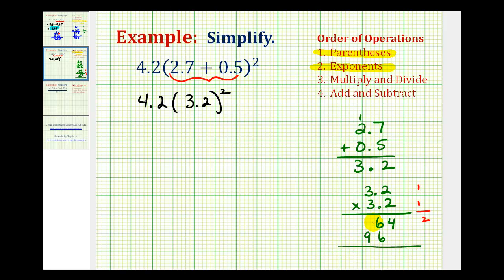And now we'll add, but we can put a 0 here. 4 plus 0 is 4, 6 plus 6 is 12, carry a 1, and this is 10. So now we have to have 2 decimal places, so starting at the right, we'll move the decimal point 2 places to the left, so 1, 2, so this product is 10.24.